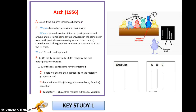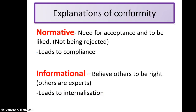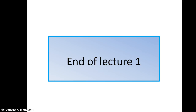That is the end of lecture one. That is all you need to know: what conformity is, the types of conformity, and the key research. You need to know Asch like the back of your hand — what he did, what he wanted to do, what he found, his conclusions, criticisms, and strengths. You're going to see how I've managed to write this as an essay later on in the lectures. Know the two explanations, give an example, and make sure you know how normative leads to compliance and how informational leads to internalisation. I'll see you in lecture one A.